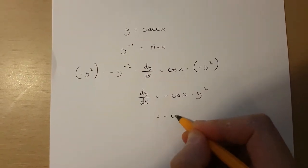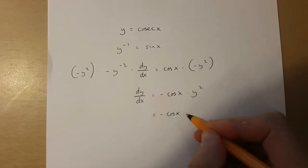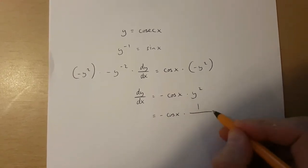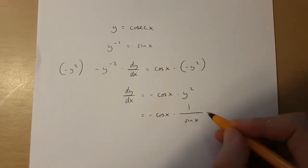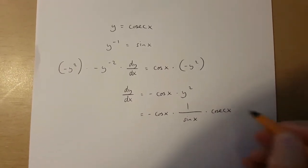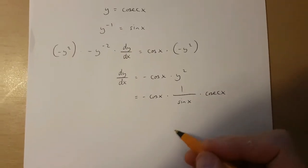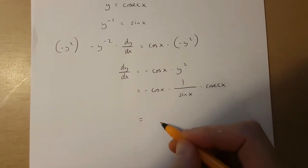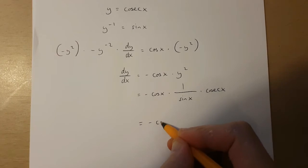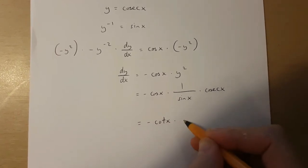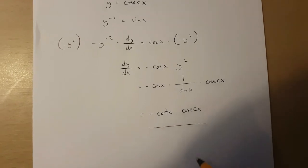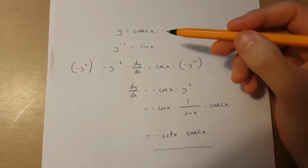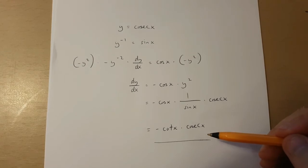And this is the same as minus cos x times 1 over sin x, which is cosec x, times cosec x. And if I simplify this, I get minus cos x times cosec x. And this is cosec x differentiated.